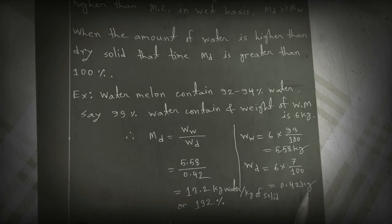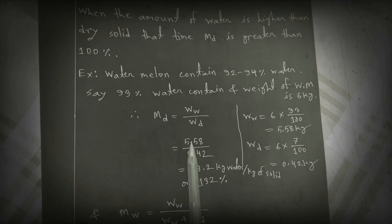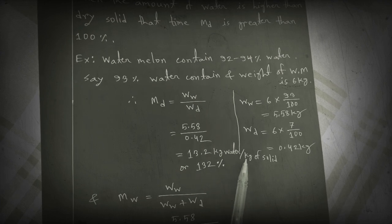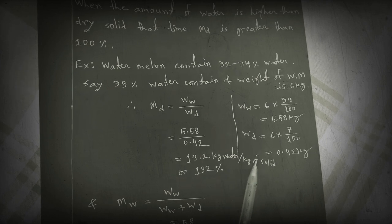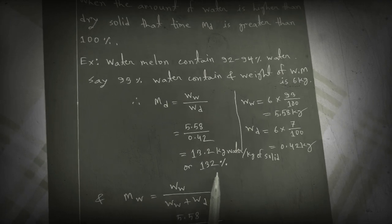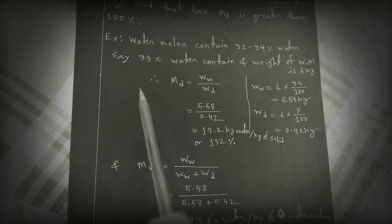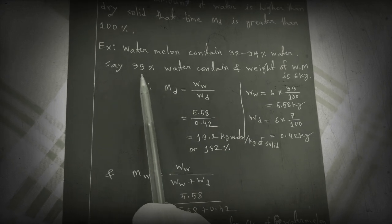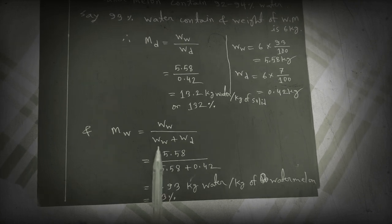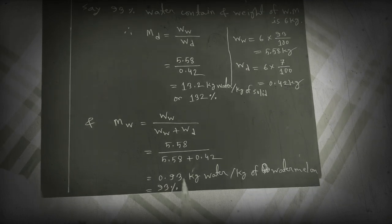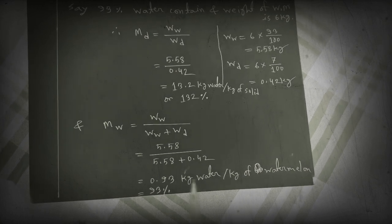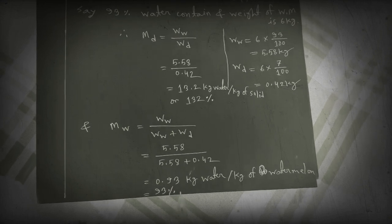From those values, Md = Ww / Wd = 5.58 / 0.42 = 13.2 kg of water per kg of solid, or 1320 percent — meaning every kg of solid watermelon contains 13.2 kg of water. For weight basis: Mw = Ww / (Ww + Wd) = 5.58 / 6 = 0.93, which is 93 percent — meaning every kg of watermelon contains 0.93 kg of water.